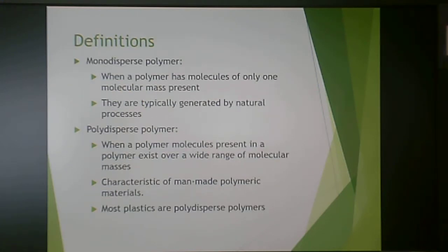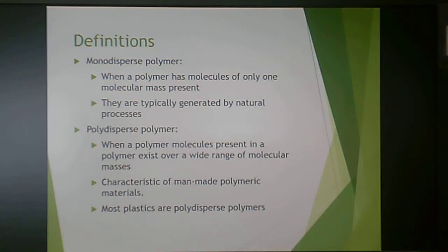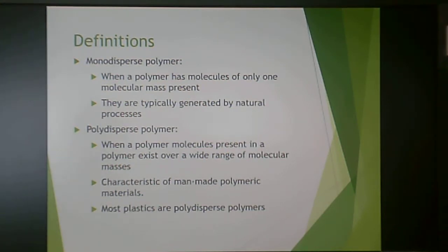A monodispersed polymer is one where the polymer has molecules of only one molecular mass present. When it comes to small molecules like water or sodium chloride, those only have one molecular mass — water is 18. But polymers, because they have many different units, can have a range of molecular weights within the same material. A monodispersed polymer has only one size of molecules in the entire batch.